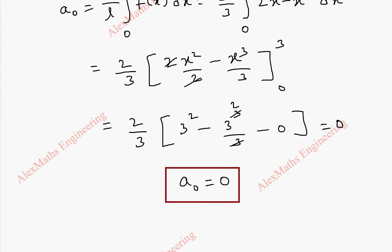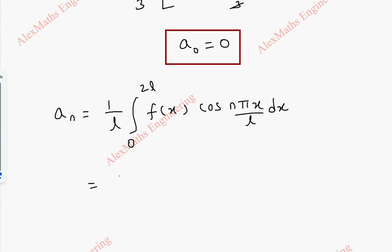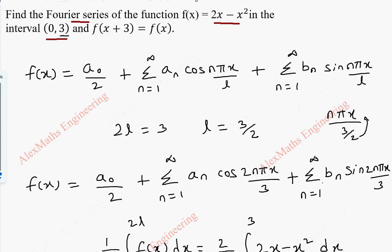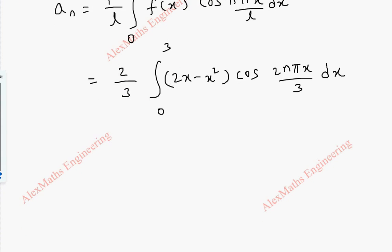So this is our first part. Now we are going to calculate an. The an formula is 1 by l, integral 0 to 2l, f of x cos(nπx/l) dx. Now, 1 by (3/2) is 2 by 3, integral 0 to 3, f of x is 2x minus x squared, into cos(2nπx/3) dx, after replacing l.